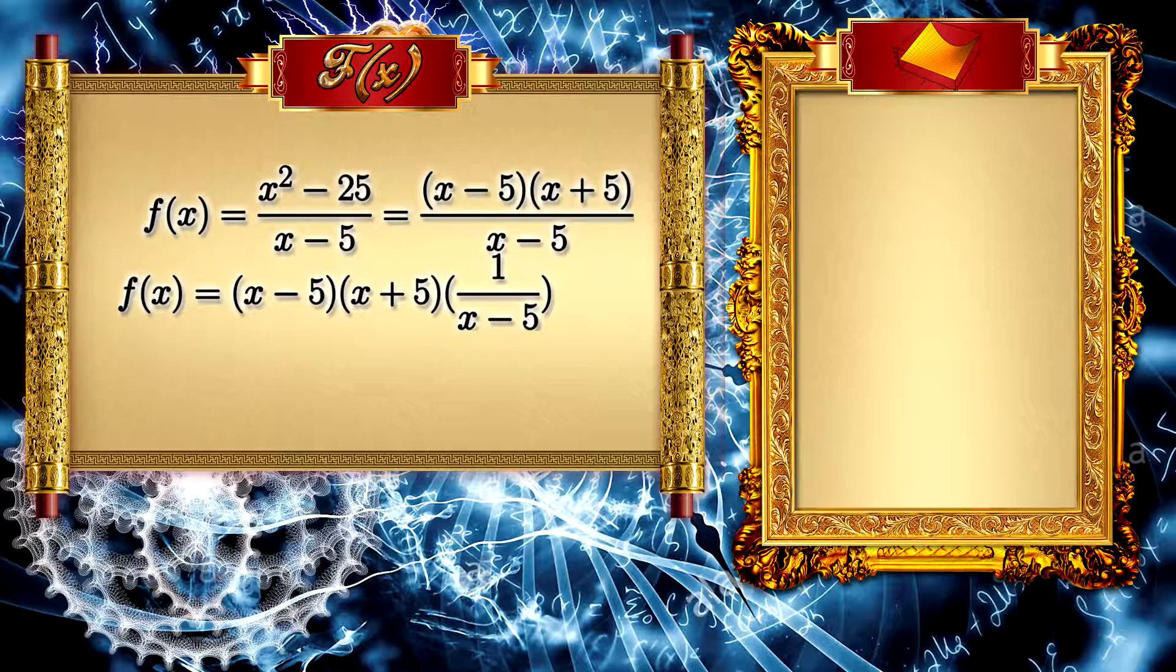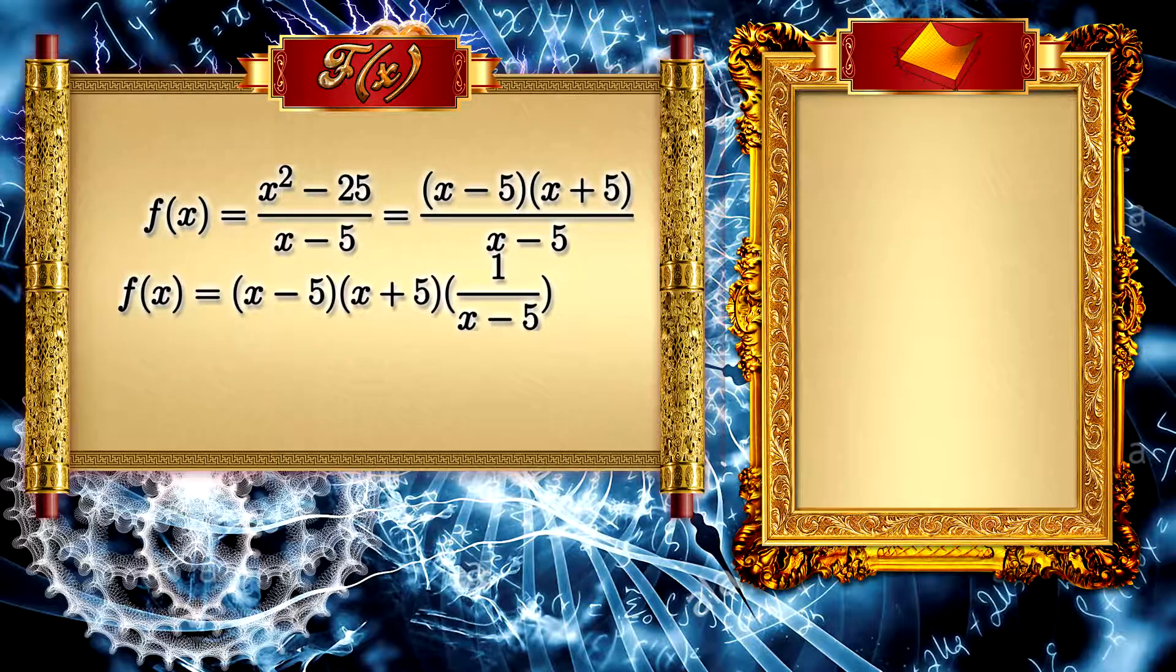For example, let f(x) be (x² - 25) over (x - 5). See that we can make this function be separated into monomials.